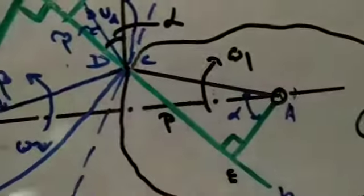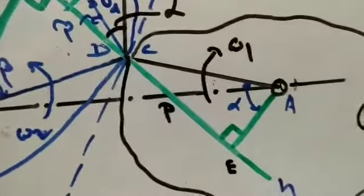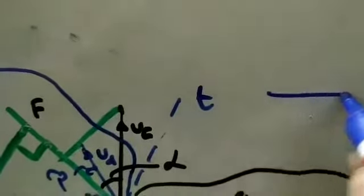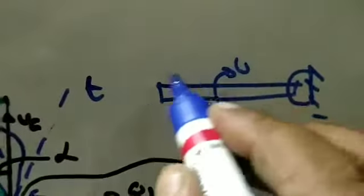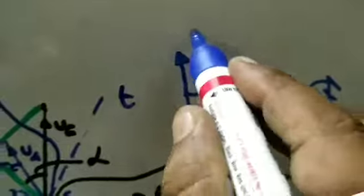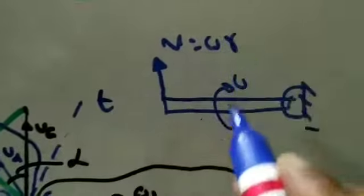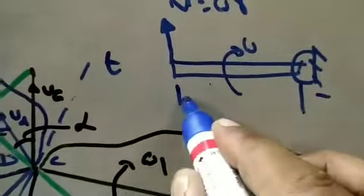Since A and C are the contact points, the linear velocity is represented as vc. The perpendicular line of a link always represents the linear velocity. If a link is rotating with angular velocity omega, the linear velocity always acts perpendicular and is equal to v = omega × r, where r is the radial distance.